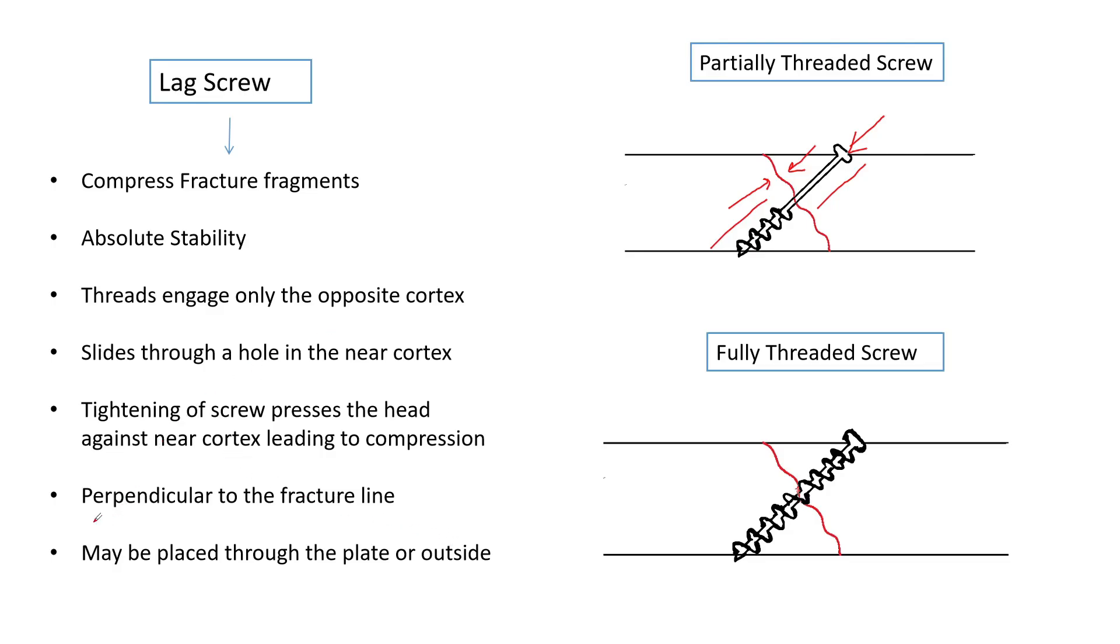For an ideal placement of lag screw, the lag screw should be placed perpendicular to the fracture. A lag screw may be placed through the plate or from outside the plate.